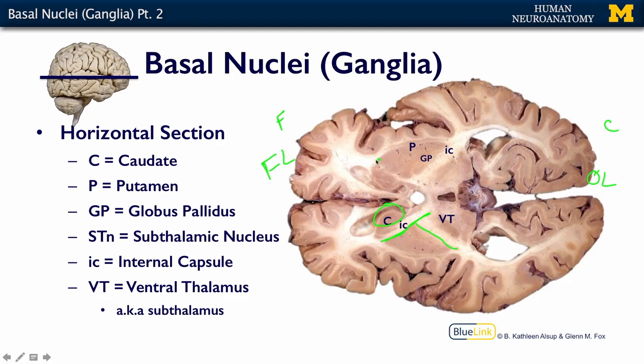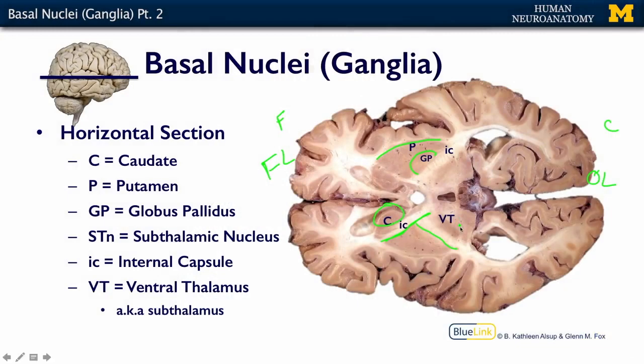In this image we can see the putamen and just a little bit of the globus pallidus, the pale globe, which sits nestled within the greater structure of the putamen. We can also see the ventral thalamus. The subthalamic nucleus isn't clearly visible in this particular plane, but it's in that zone. In the next set of slides, we're going to talk about the circuitry of the basal nuclei.